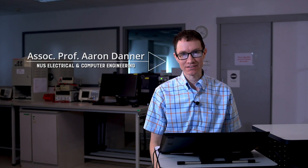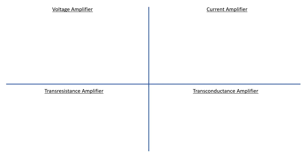It turns out that there are four types of negative feedback. These follow from the four types of amplifiers. Sometimes there's more than one way to model an amplifier. Let's go through the four different types.